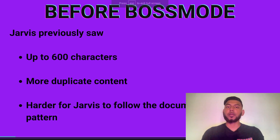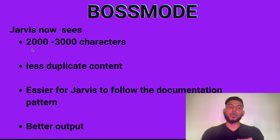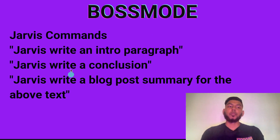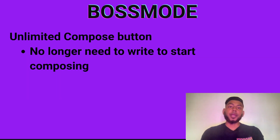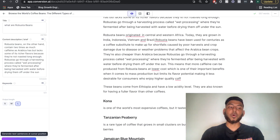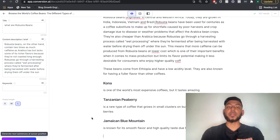The main differences between the Pro Unlimited and the boss mode: on the Pro Unlimited, Jarvis is only able to see 600 characters, which means you get more duplicate content and it's harder for Jarvis to follow the documentation pattern. On boss mode, Jarvis is able to see 2,000 to 3,000 characters, giving you less duplicate content. You also have access to Jarvis commands — such as 'Jarvis write a conclusion' or 'Jarvis write a blog post summary for the above text.' Lastly, on boss mode, your compose button is unlimited.